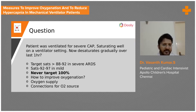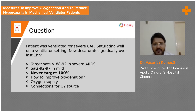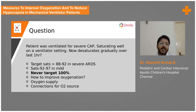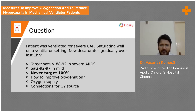In this question, assume the patient is ventilated for severe community-acquired pneumonia. He was initially saturating well on your ventilator settings, but now over a period of time — the last one or two hours — you find the patient is gradually desaturating.